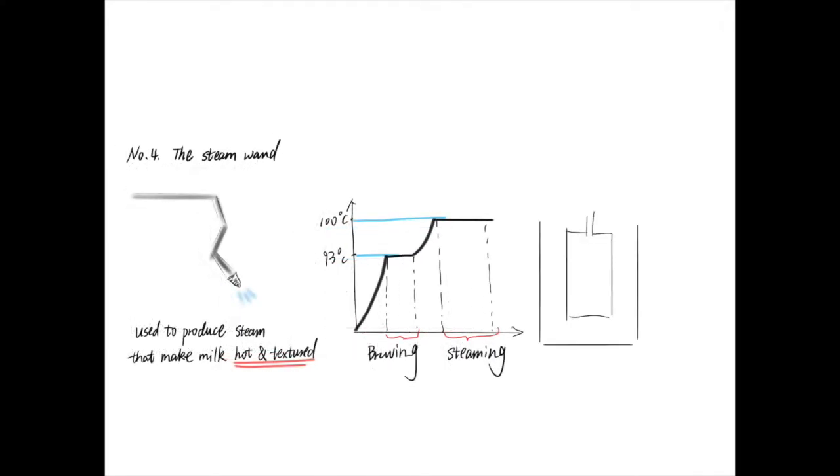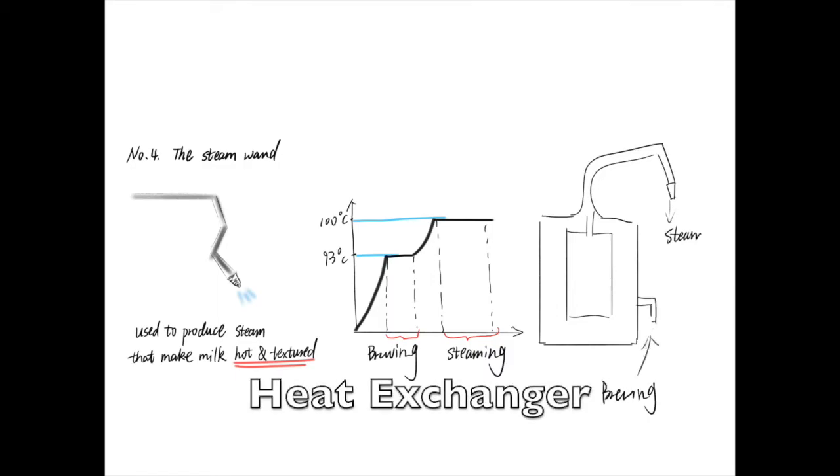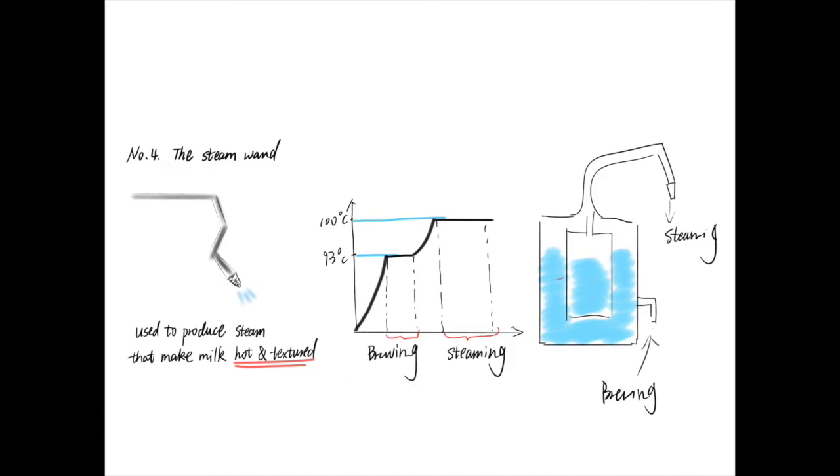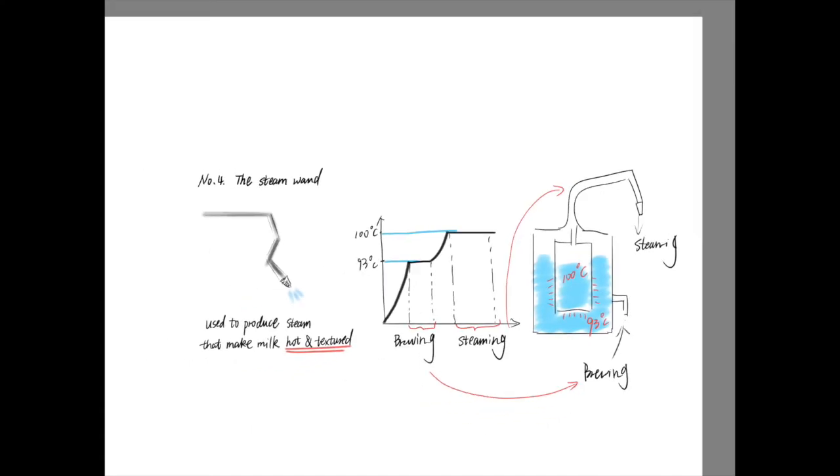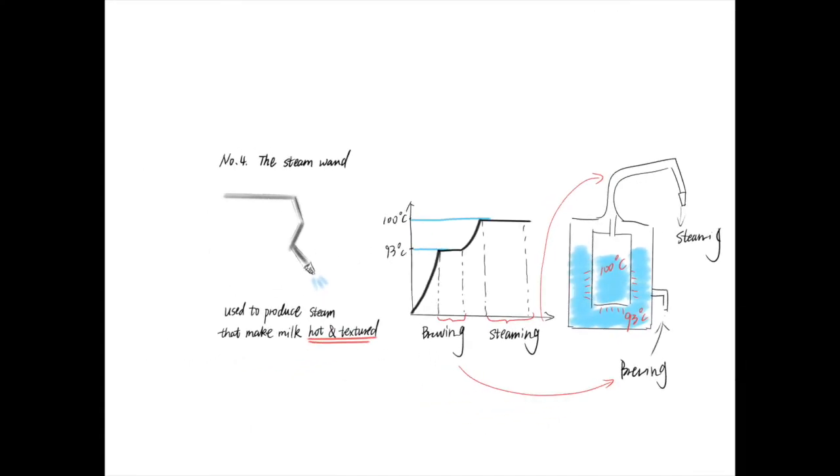In a heat exchanger machine, the water in the boiler is only used to produce steam. Another water line runs through a heat exchanger around the boiler. The steaming water in the boiler heats up the water in the heat exchanger without bringing it to a boil.